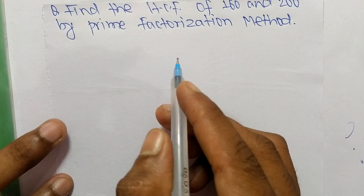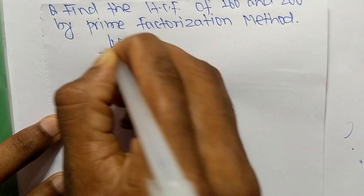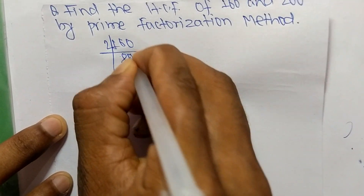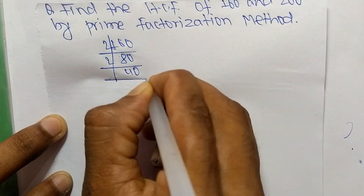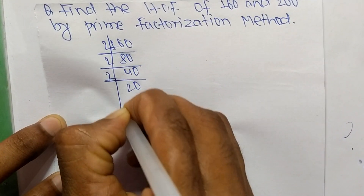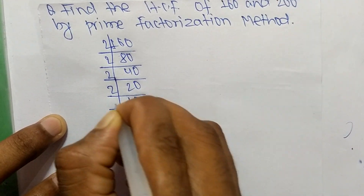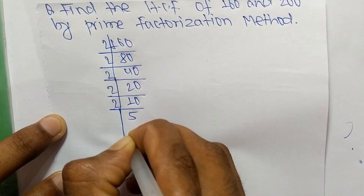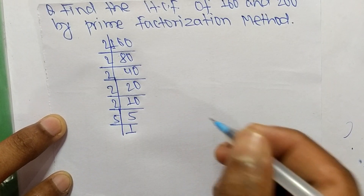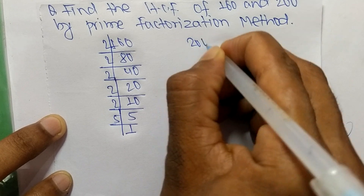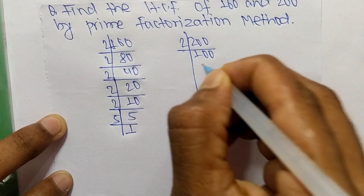First we find out the prime factors of 160. It is 2 times 80 means 160, 2 times 40 means 80, 2 times 20 means 40, 2 times 10 means 20, 2 times 5 means 10, and 5 times 1 means 5. Likewise, the prime factors of 200: it is 2 times 100 means 200.